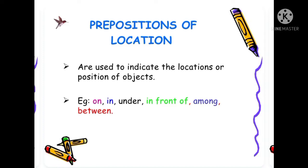Prepositions of location are used to indicate the locations or position of objects. Example: on, in, under, in front of, among, between.